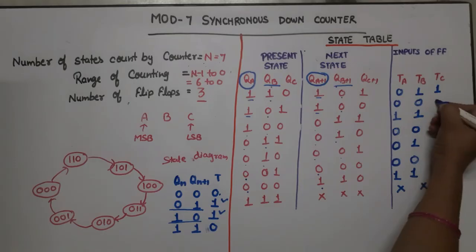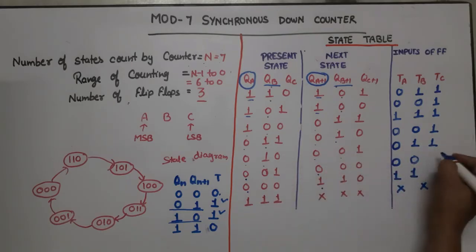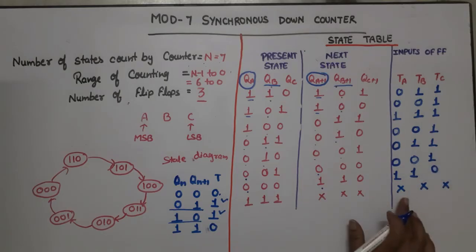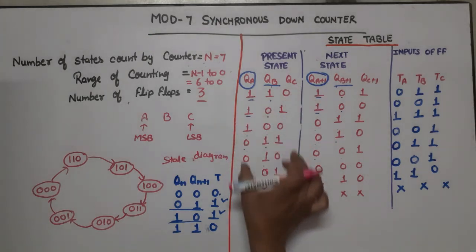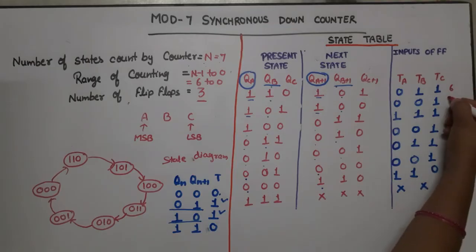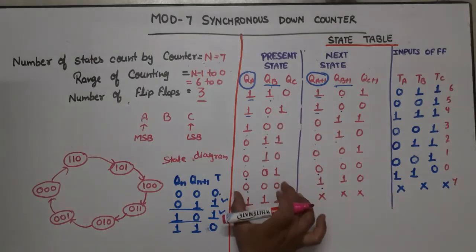For TC, comparing QC and QC+1: 0→1 change gives 1; 1→0 change gives 1; 0→0 no change gives 0; 0→0 no change gives 0; 0→0 no change gives 0. Writing decimal equivalents: the rows correspond to states 6, 5, 4, 3, 2, 1, 0 and don't care 7.